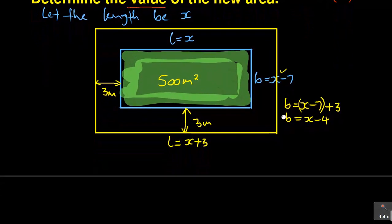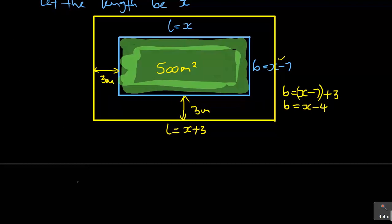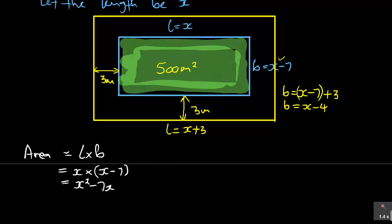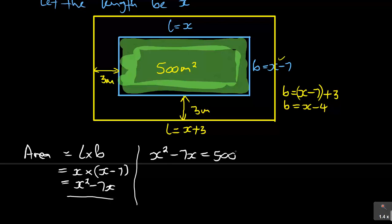Determine the value of the new area. So this is the diagram to work from. First, let's consider the first rectangular field. Area of a rectangle is equal to length times breadth, which is X times X minus seven. So X times X is X squared, and X times minus seven is minus seven X. That is the expression for our area. But remember they told us the area was 500 square meters. So X squared minus seven X equals 500, which gives us X squared minus seven X minus 500 equals zero.